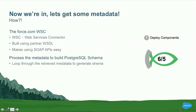Now that we've authenticated, we need some metadata. I'm using the Force.com WSC, or Web Services Connector. The Web Services Connector is something you build yourself using the partner WSDL — it makes accessing the SOAP APIs from Java incredibly easy. Be aware that since it's something you need to build using the partner WSDL, it's not available as a Maven dependency, so you'll need to include a local repository in order to deploy it to Heroku. If you want to know more about the WSC or the APIs, you can go and chat to the integration guys in the developer forest. Once I've got the metadata, I need to loop through it and build the PostgreSQL schema.